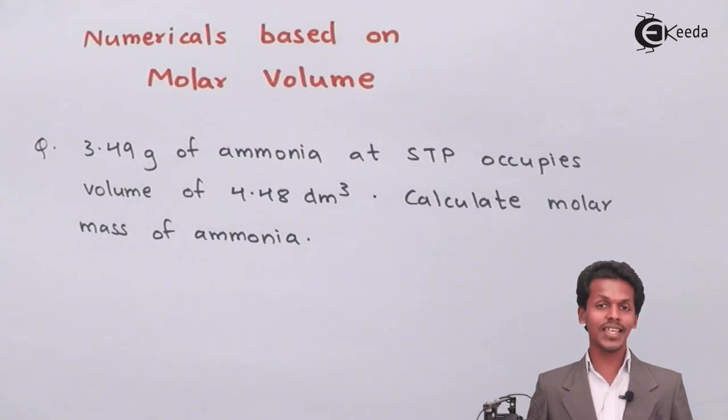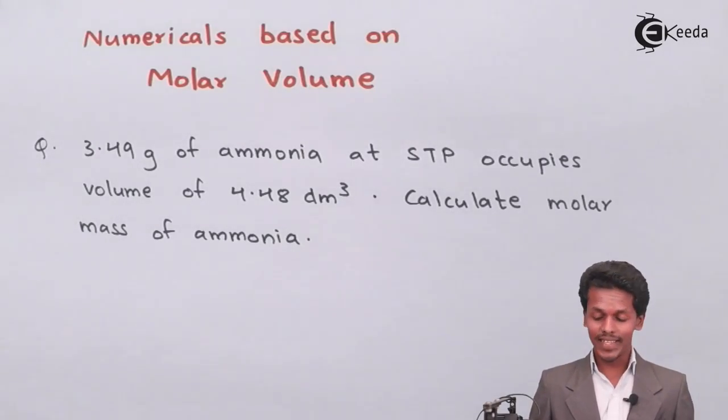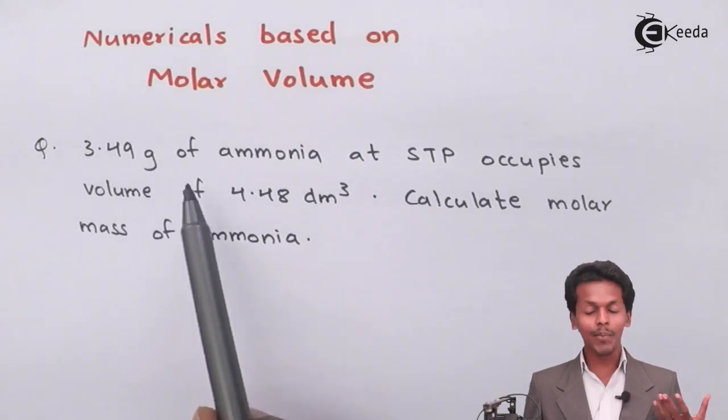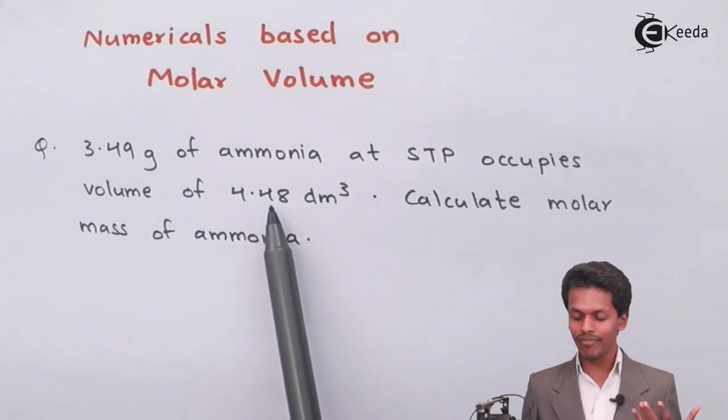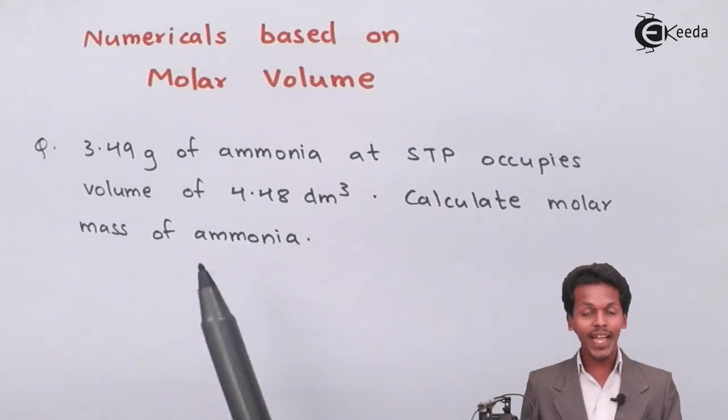As mentioned on your screen, there is a question which says that 3.49 grams of ammonia at STP, that is standard temperature and pressure, occupies a volume of 4.48 dm³. From that, we have to calculate the molar mass of ammonia.